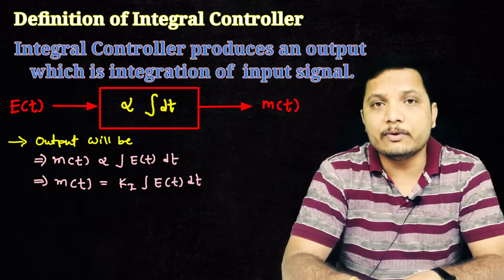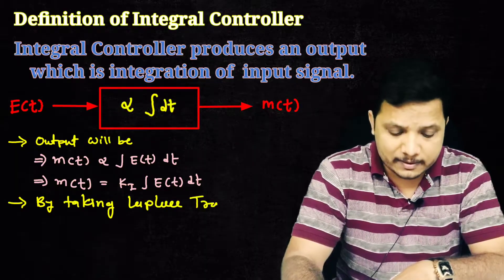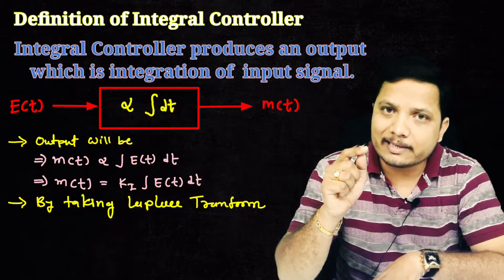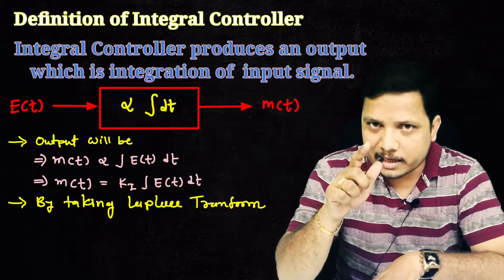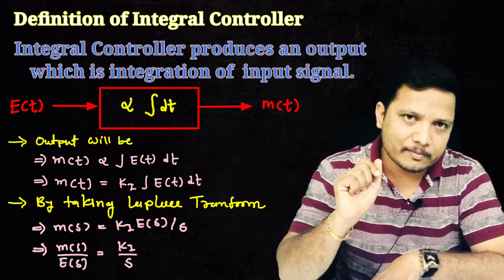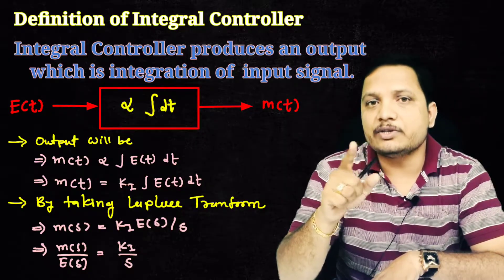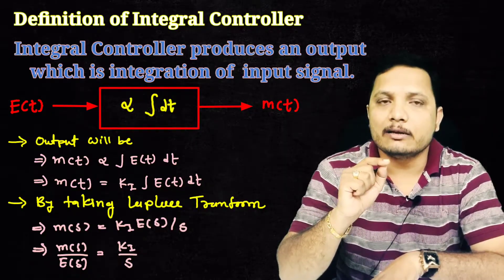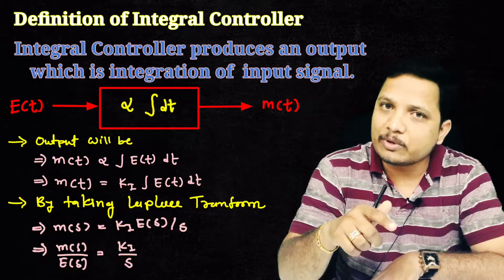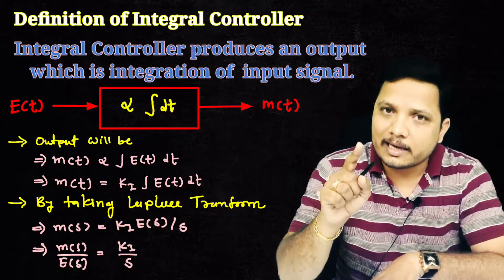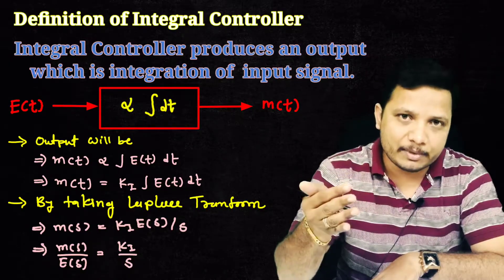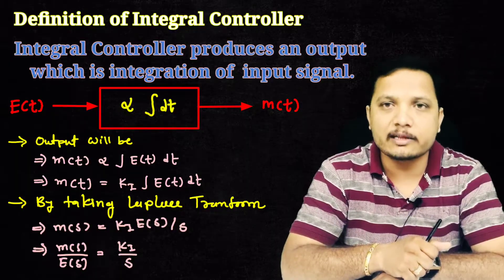Taking the Laplace transformation, the integration of e(t) becomes E(s) divided by s. So the transfer function of the integral controller — output M(s) divided by input E(s) — equals Ki divided by s. That is how the output is defined per the basic definition of the integral controller.